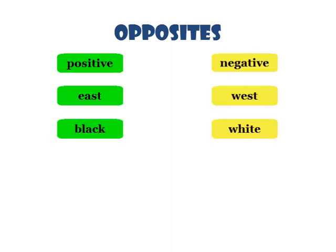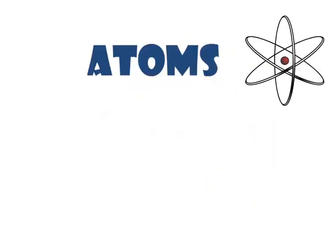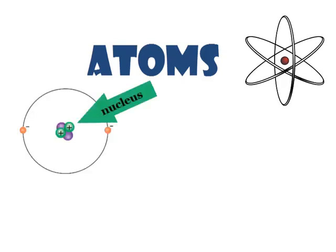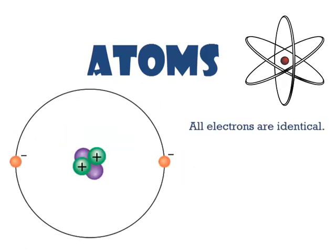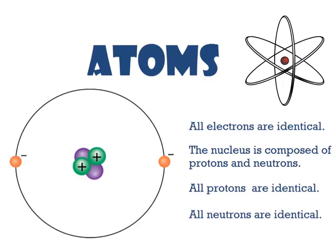Neutrons have no charge; they aren't attracted or repelled by charged particles. Here's some things you need to know about atoms: Every atom has a positively charged nucleus surrounded by negatively charged electrons. All electrons are identical. The nucleus is composed of protons and neutrons. All protons are identical, and all neutrons are identical as well.